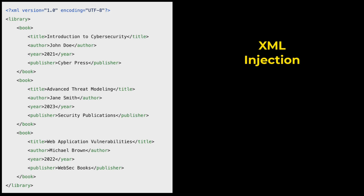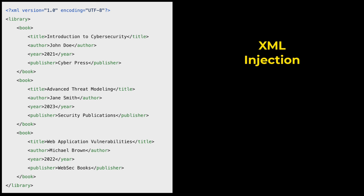XML injection is an attack targeting applications that process XML data. It exploits how XML parsers handle user input, allowing attackers to manipulate the structure and content of XML documents. XML injection attacks occur when an application constructs XML documents using unsanitized user input. If the input is not properly validated or sanitized, an attacker can inject special characters or additional XML elements to alter the behavior of the XML parser, possibly resulting in unauthorized access to data, bypassing authentication mechanisms, or executing arbitrary code.